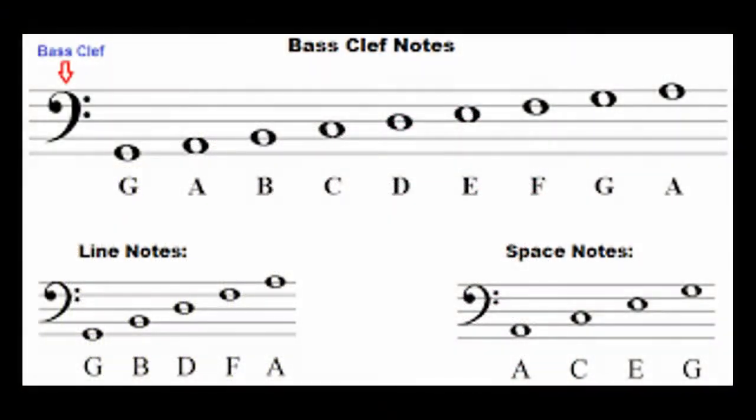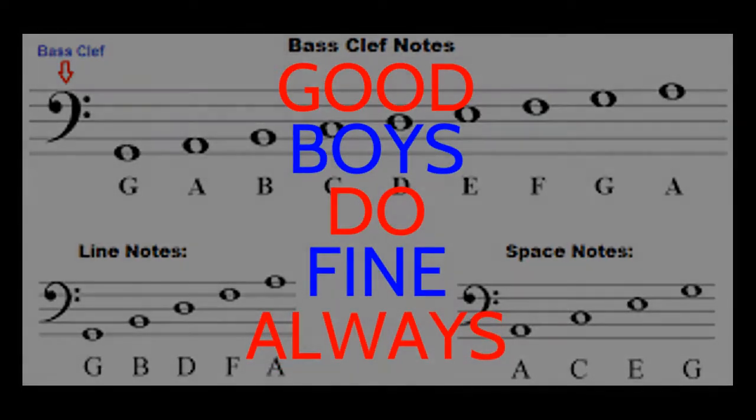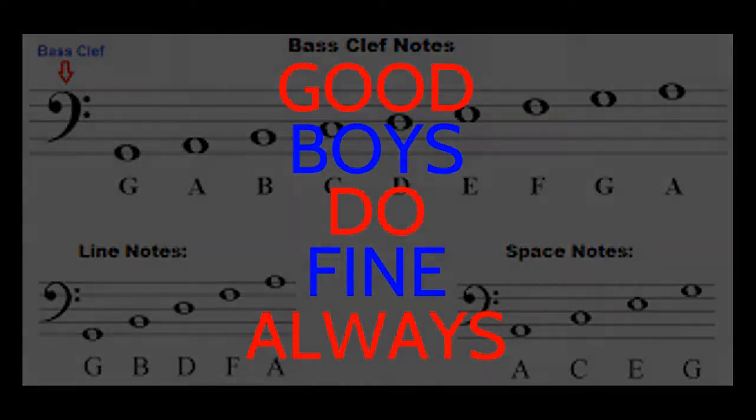The names of the notes on the lines from bottom to top are G, B, D, F, and A. We use the mnemonic device, good boys do fine always, to remember it.